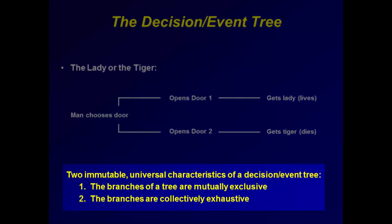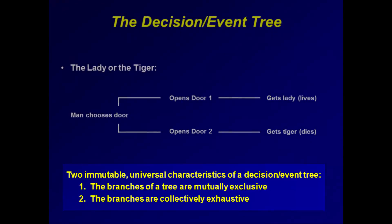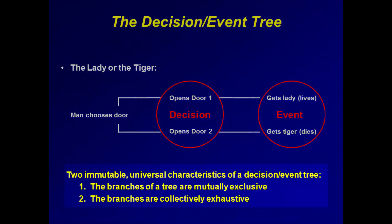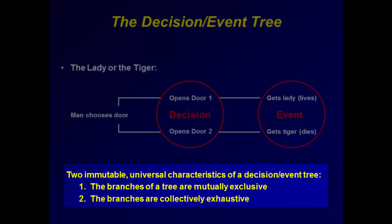This example demonstrates the two immutable universal characteristics of a decision event tree. By mutually exclusive, we mean that if you choose door one then you can't pick door two — a decision is made to pursue a particular path, and there is a consequence, an event, for each decision. By collectively exhaustive, we mean that the alternatives at each branch incorporate all possibilities — no other options are possible, either decisions or events, at that point in this sequence or scenario.